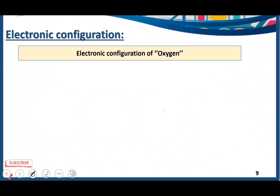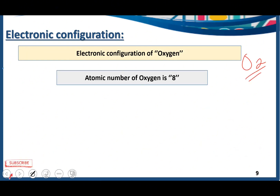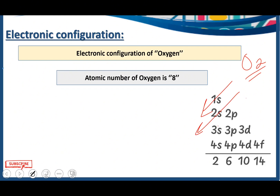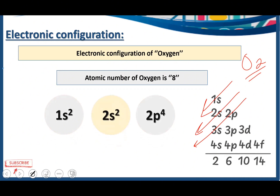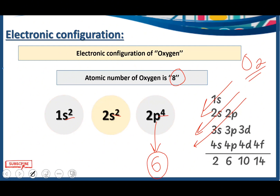Electronic configuration of oxygen — oxygen is also a very important gas, atomic number 8. We write 1s2, 2s2, 2p4. Counting: 2+2=4, 4+4=8. Remember, in the p subshell we can accommodate up to 6 electrons, but here we accommodate 4 electrons according to our need. Oxygen is also a p-block element because the valence electrons reside in the p subshell. The electronic configuration of oxygen is 1s2, 2s2, 2p4.